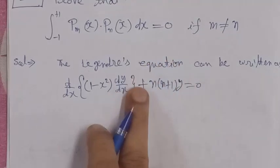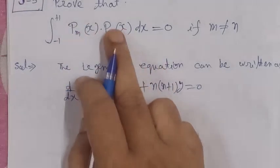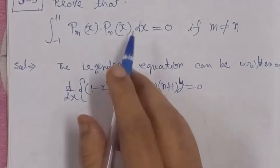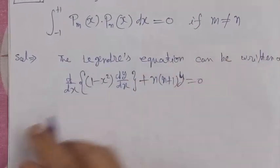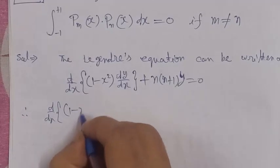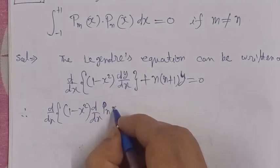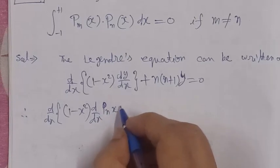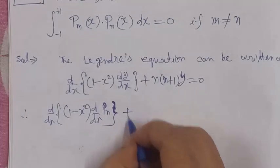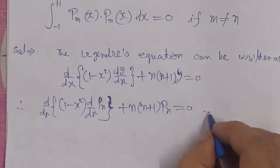If Pₙ satisfies this equation, then substituting y = Pₙ gives us: d/dx[(1 - x²) dPₙ/dx] + n(n+1)Pₙ = 0. We call this equation number one.